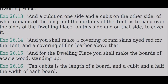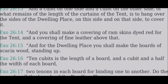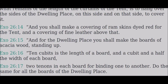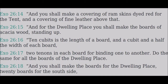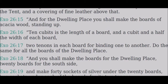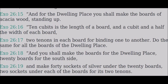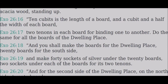Make a covering of ram skins dyed red for the tent, and a covering of fine leather above that. For the dwelling place, make the boards of acacia wood standing up. Ten cubits is the length of a board, and a cubit and a half the width of each board. Two tenons in each board for binding one to another. Do the same for all the boards of the dwelling place.